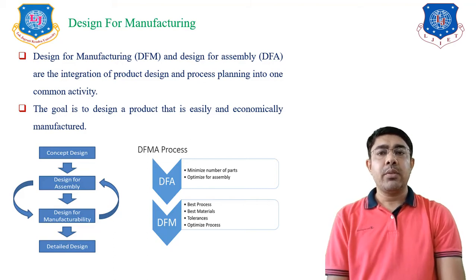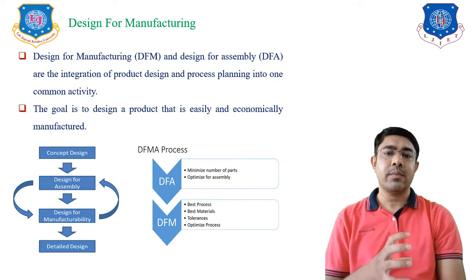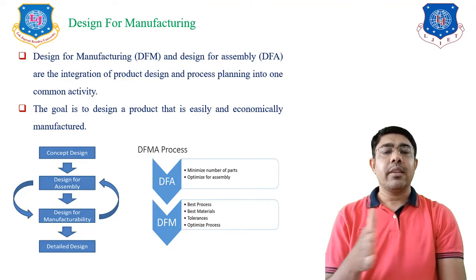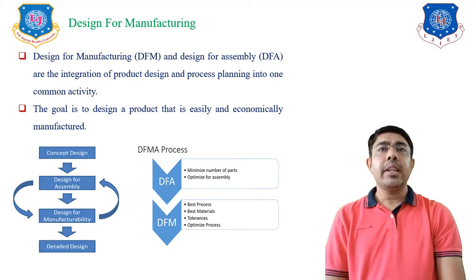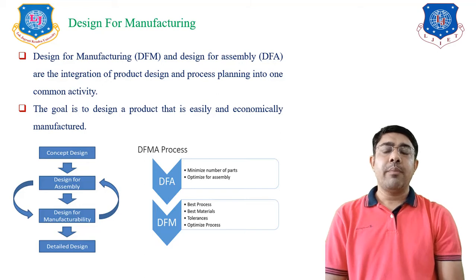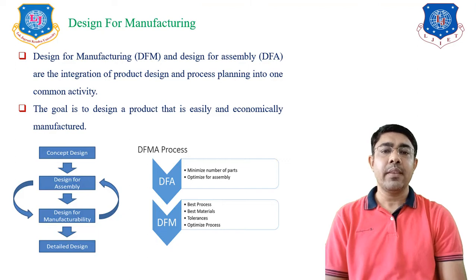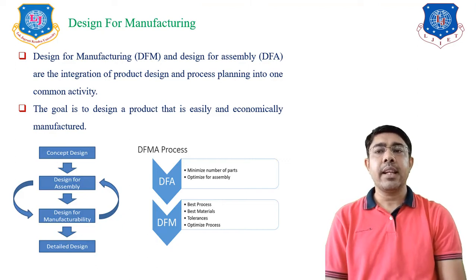In Design for Strength, you design the component when it is subjected to load, and whatever stress is produced on that component must be within the permissible limit or below the yield stress. In Design for Stiffness, you design the component such that the deformation when subjected to load is within the permissible limit of deflection. This is the design you learn in Machine Design.